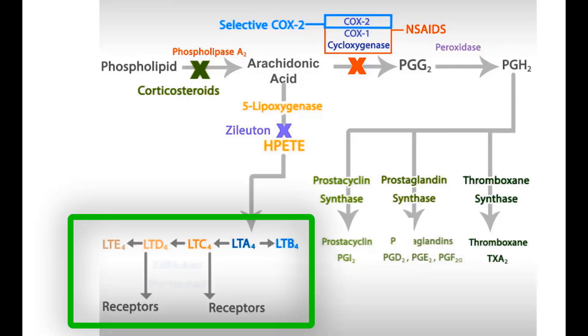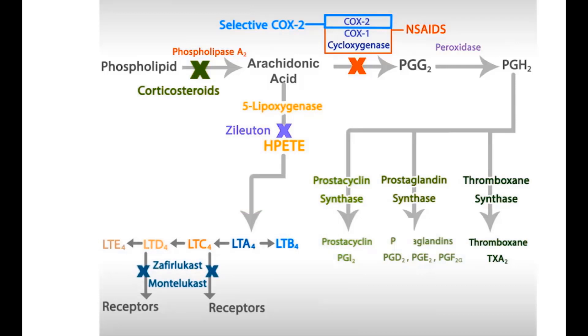Finally, zafirlukast and montelukast drugs are selective competitive inhibitors of leukotriene C4, D4, and E4 receptors.